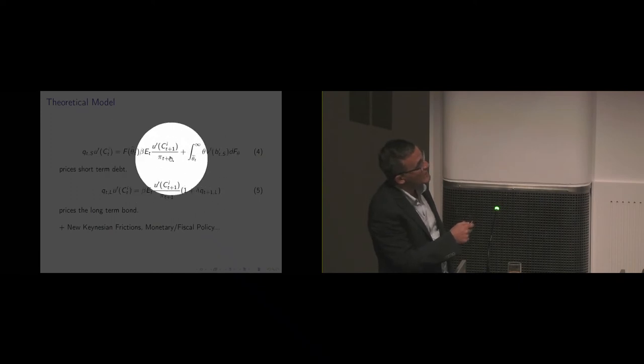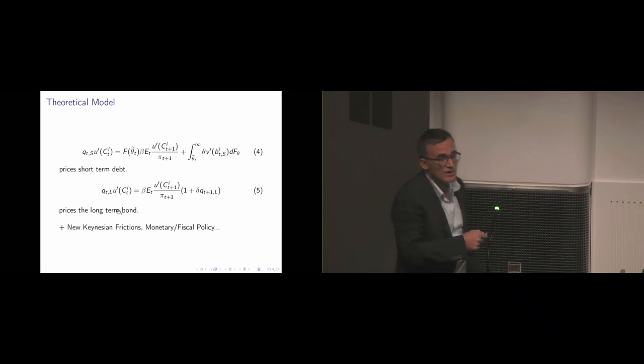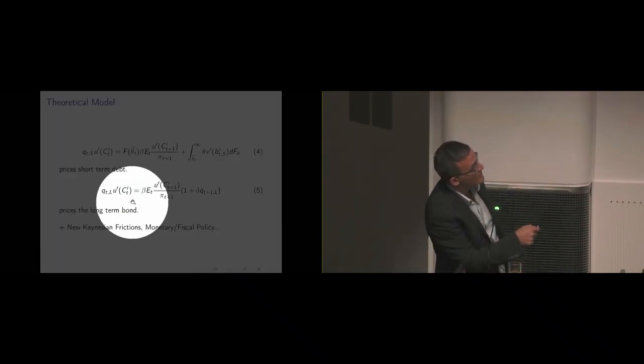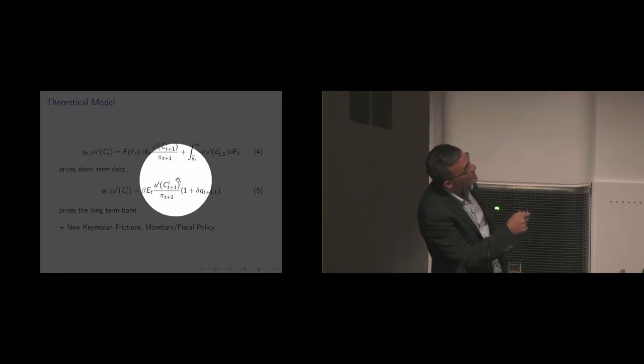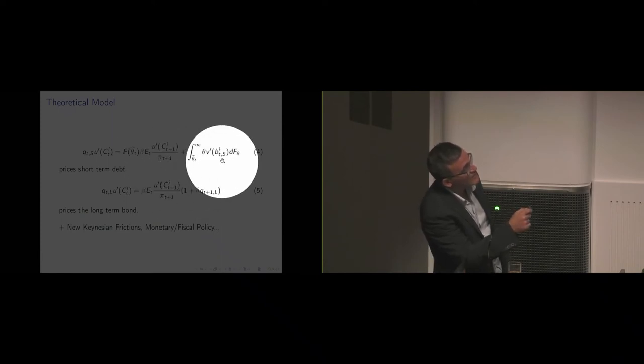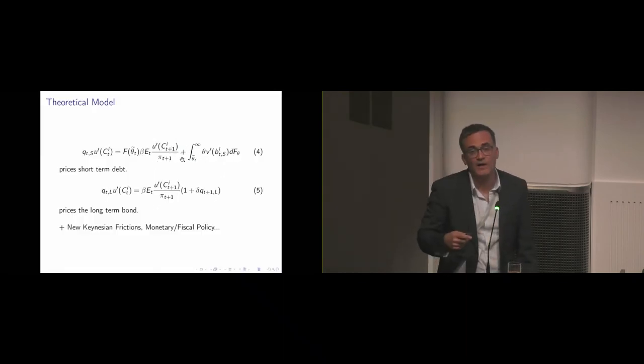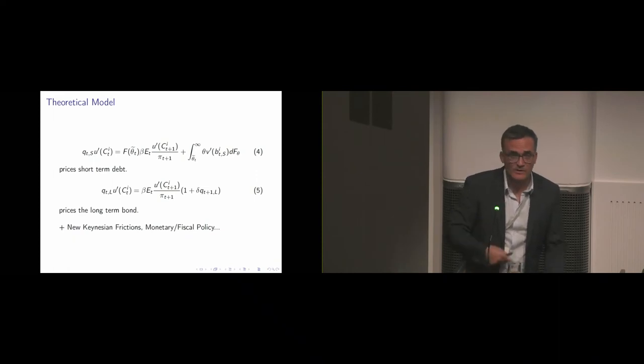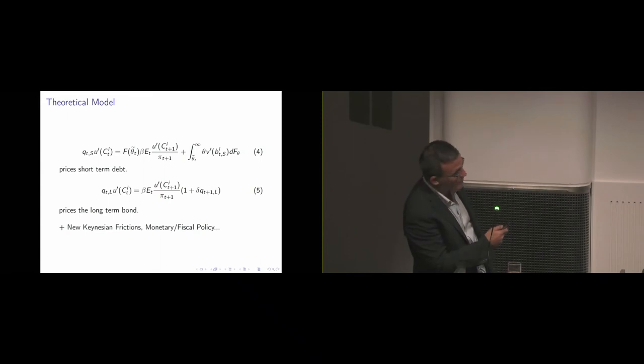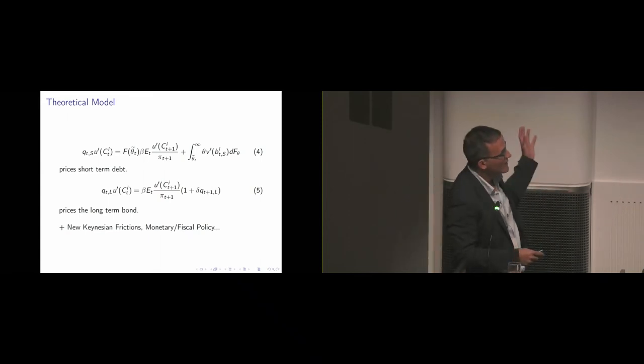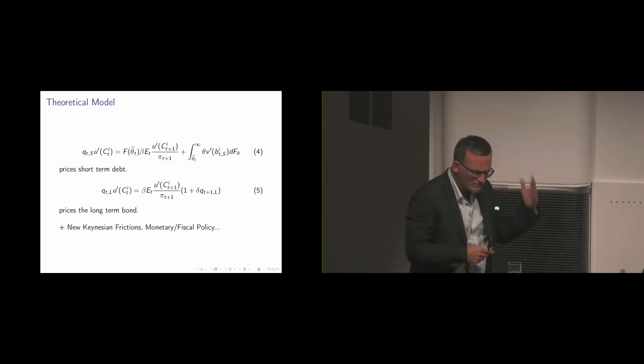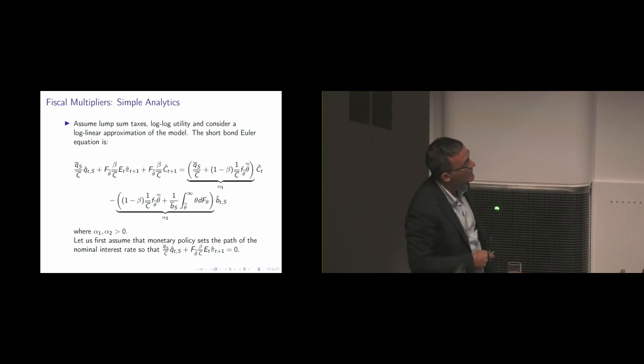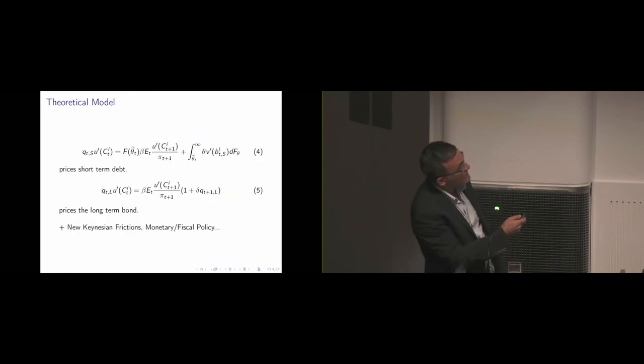These are two bond pricing equations, one for short-term debt and the other is a standard Euler equation for long-term debt, which in our model is a perpetuity that pays a coupon. Equation five is a standard asset pricing formula. This Euler equation features expected inflation, the expected marginal utility of consumption, and also this additional term, which is the money-like services that short bonds provide.